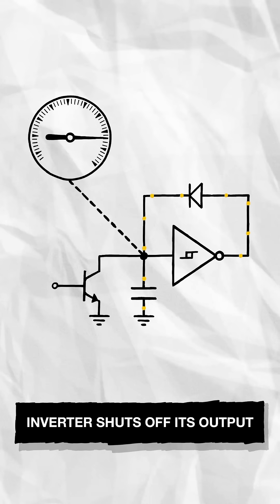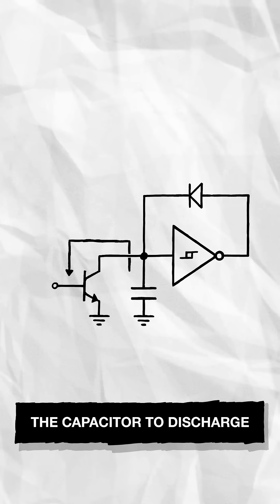Once it's high enough, the inverter shuts off its output. Now the transistor acts like a drain valve, allowing the capacitor to discharge.